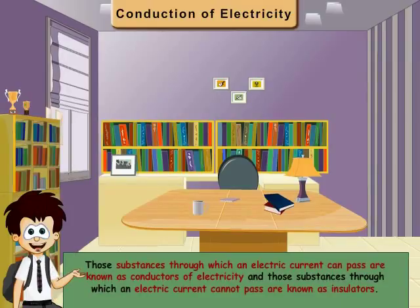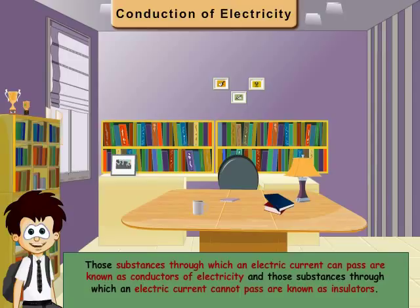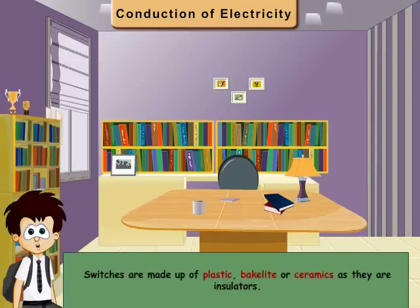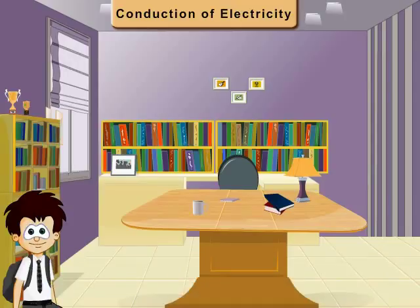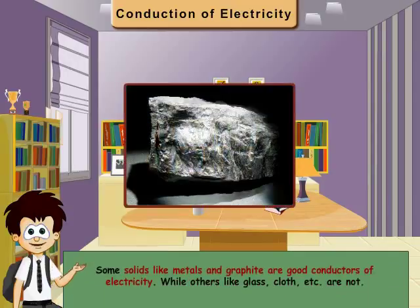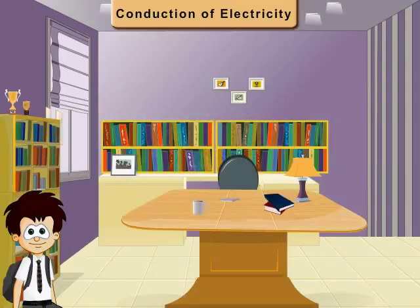Those substances through which an electric current can pass are known as conductors of electricity, and those substances through which an electric current cannot pass are known as insulators. Switches are made up of plastic, bakelite or ceramics as they are insulators. Some solids, like metals and graphite, are good conductors of electricity, while others, like glass, cloth, etc., are not.